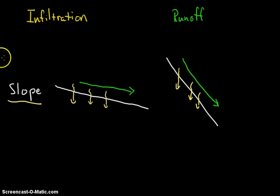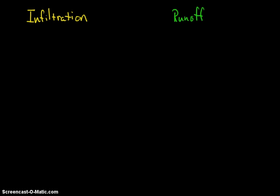So slope, that's our first characteristic or first factor. Next, we have vegetation. Vegetation is just plant life.